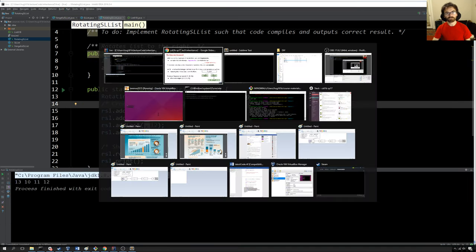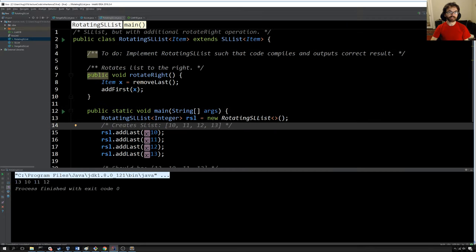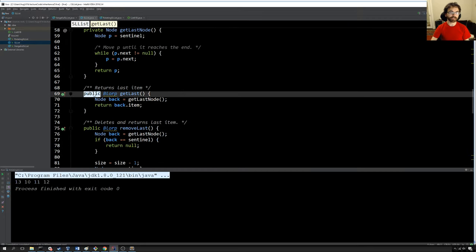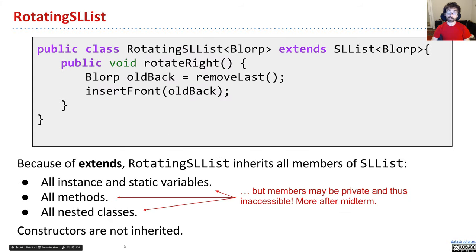Because of the extends keyword, this new RotatingSList class inherits all of the members of SList. What's a member? That's all the instance and static variables, all of the methods, and any nested class. However, there's a funny thing — if I declare one of these SList properties as private, then RotatingSList won't be able to use it. But we'll see that after the midterm. Constructors, by contrast, are not inherited, and we'll play around with what that means later in this lecture.